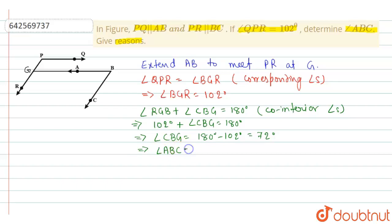Now angle CBG and angle ABC are the same angles. So we can write angle ABC is equal to 72 degrees.